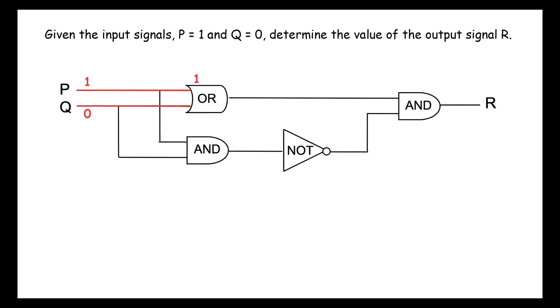Then we trace the q wire to the same OR gate and note that q inputs 0 into this gate. So for the OR gate, we have 1 or 0 equals 1.